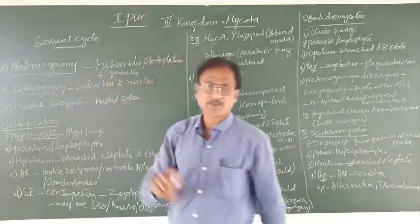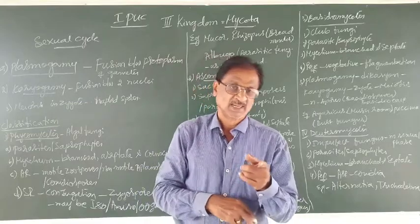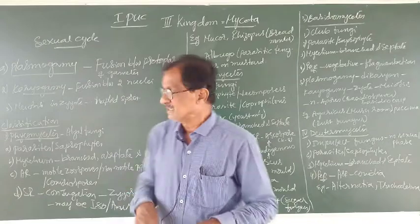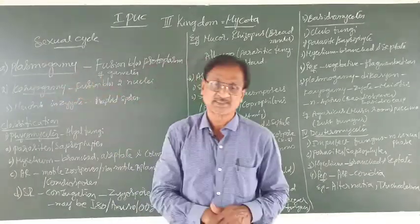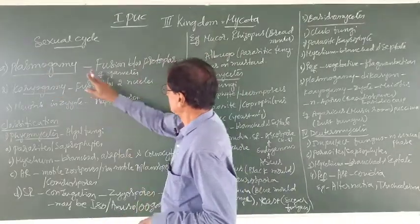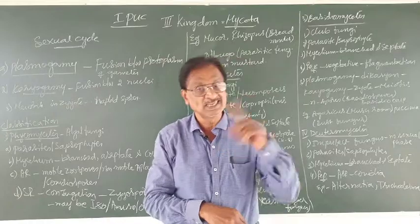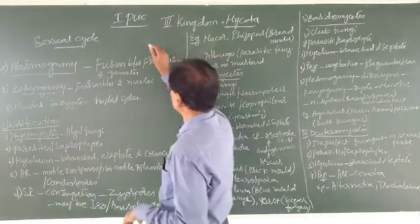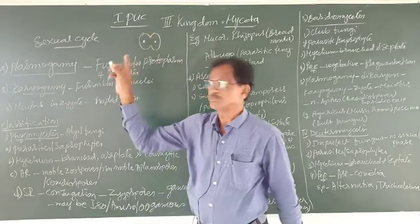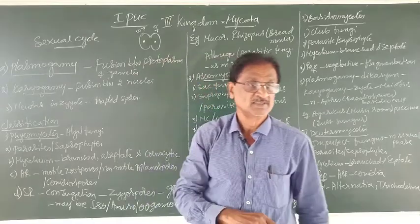What is plasmogamy? Plasmogamy is nothing but the fusion between the protoplasm of two gametes — that is both male and female gametes, whether they are motile or non-motile, it is immaterial. 'Gamy' means gametes; 'plasmo' means the matrix of the gamete, that is the protoplasm. The fusion between the protoplasm of the two gametes, male and female, whether motile or non-motile, is called plasmogamy.